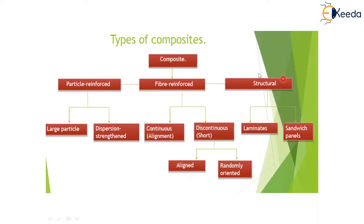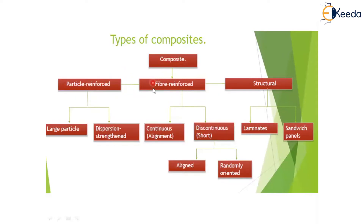The third category in composite material is structural composites. Structural composites are divided into laminates — where layer by layer we add the material, with one layer made of a different material than the next — and sandwich panels. These are the three classifications: particulate reinforced, fiber reinforced, and structural composite material.